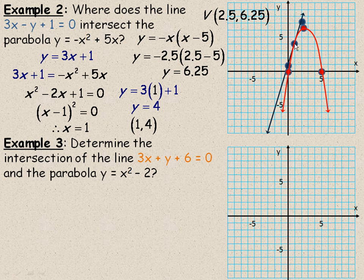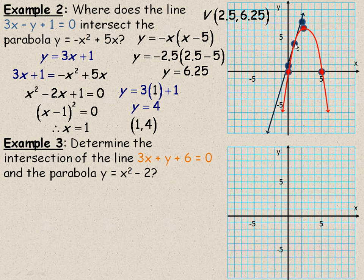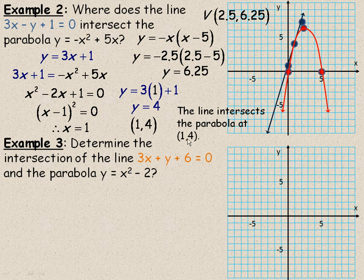And we see that there is the only point of intersection between the line and the curve. The line is tangent to the curve at (1, 4). And so to answer where do they intersect, the line intersects the parabola at the point (1, 4).